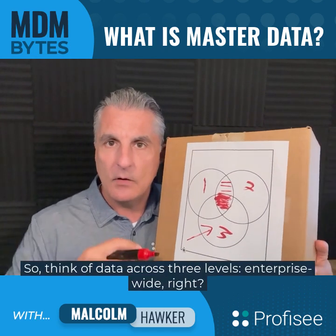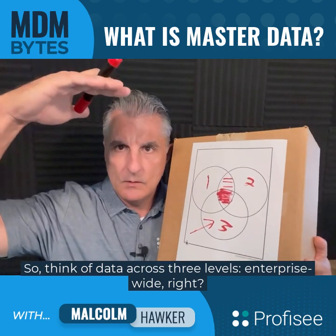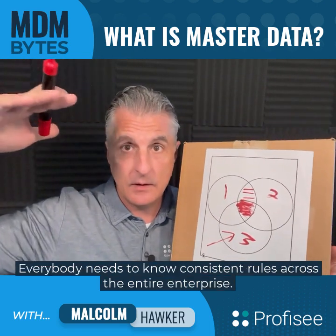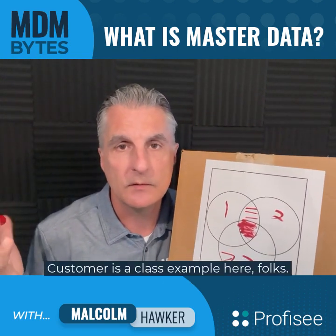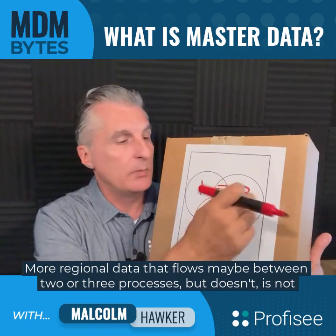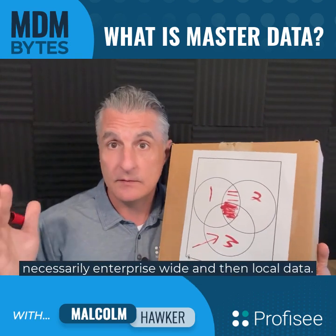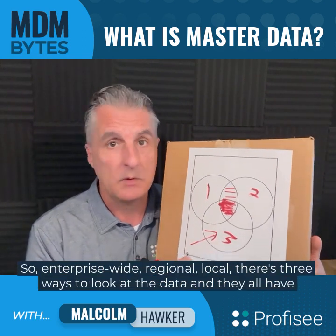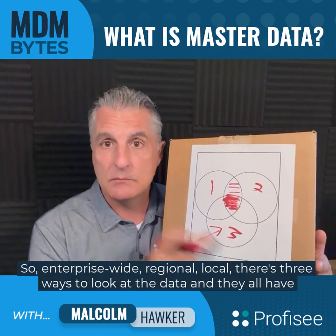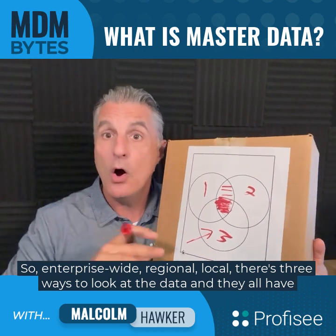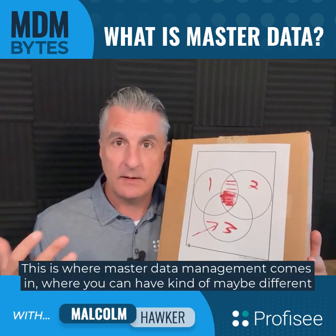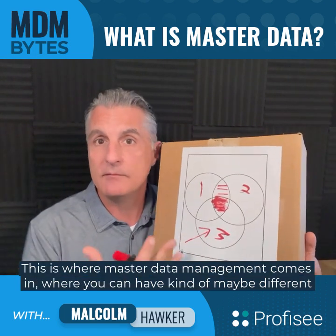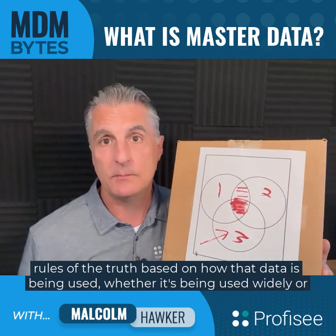Think of data across three levels: enterprise-wide — everybody needs consistent rules across the entire enterprise, customer is a classic example — then more regional data that flows between two or three processes but isn't necessarily enterprise-wide, and then local data. Enterprise-wide, regional, local — three ways to look at data, and they all have potentially different rules. This is where master data management comes in, where you can have different rules of truth based on how that data is being used, whether widely or just within an individual system.